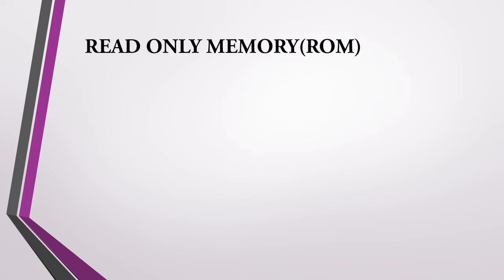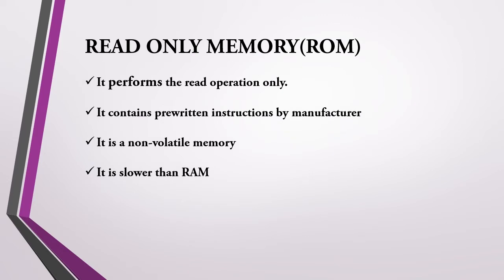The second type of primary memory is read-only memory. As the name implies, ROM is a memory unit that performs the read operation only — it does not have write capability. It contains pre-written instructions by manufacturers and cannot be altered. Hence it is non-volatile, whereas RAM is a general-purpose device whose contents can be altered. Read-only memories are used for specific applications and they are slower than RAM.